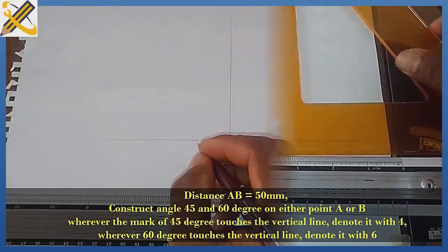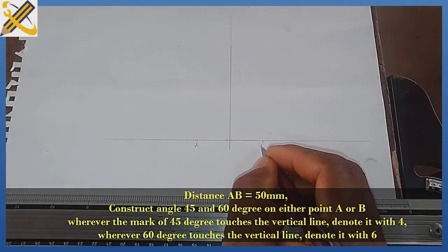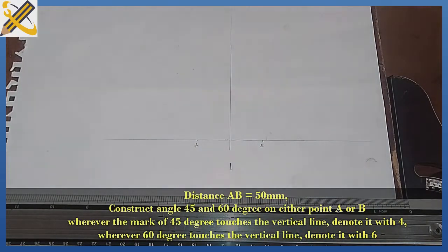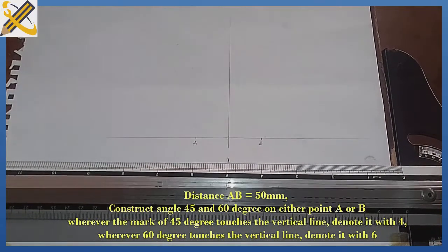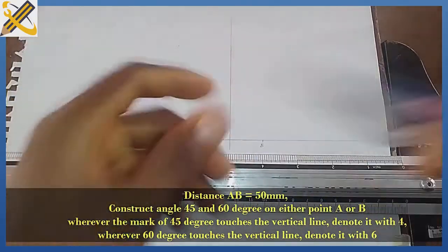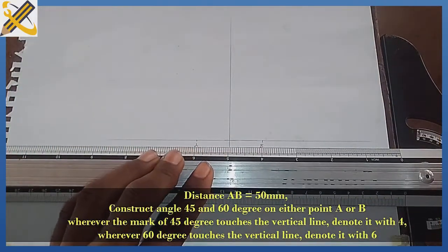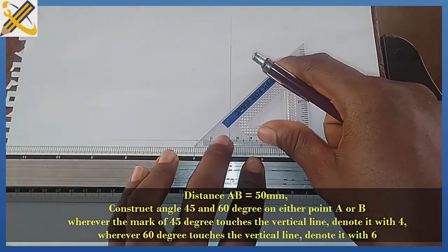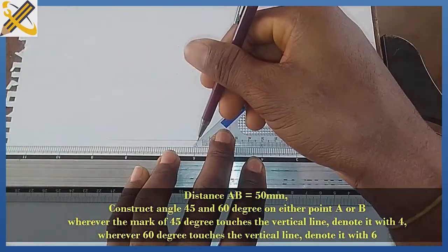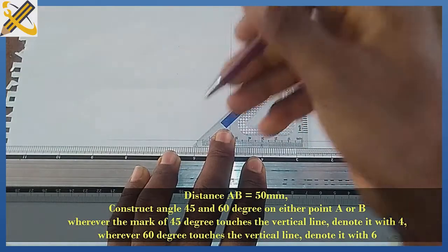Point AB is equal to 50mm. The next procedure is I am going to construct angle 60 and angle 45 degrees. On point A, I construct angle 45 degrees. You can do the reverse, just construct any of the angles on any of the points, but I'm going to choose point A for angle 45.